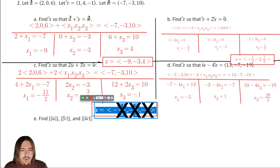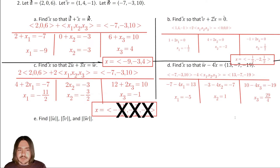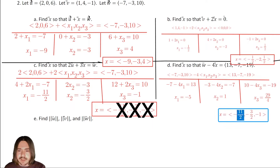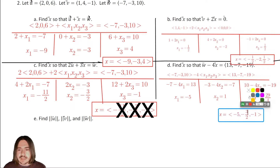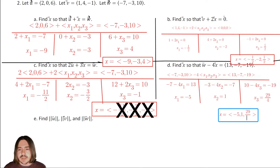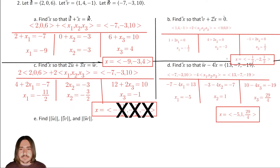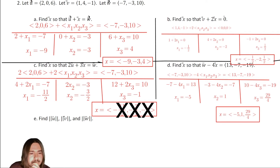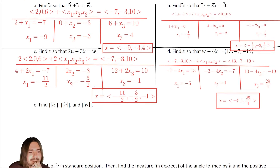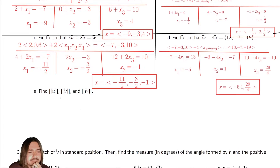So the final answer for part D is vector X equals negative five comma positive one comma positive twenty-nine over four. Each problem required solving three separate equations. Letter E just asks for the magnitude, which should not take as long.